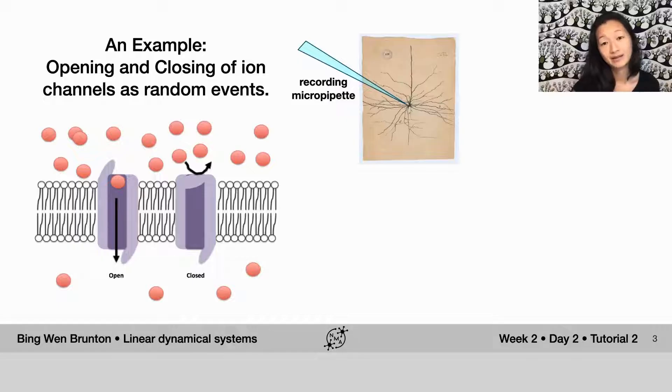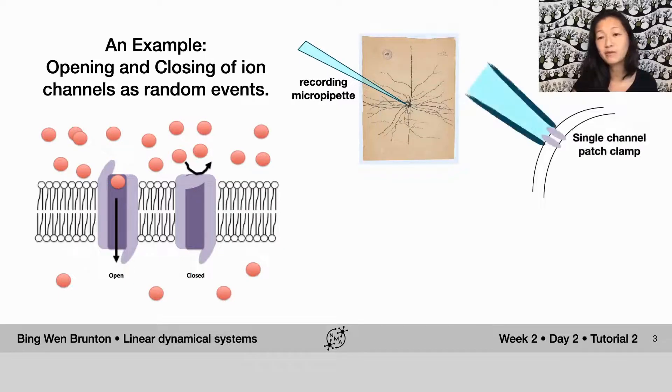And you can monitor that by taking a very small recording micropipette, sticking it onto the cytoplasm of the cell and forming what's called a single channel patch clamp, and thereby monitoring exactly what's happening, the flow of ions through a single channel.